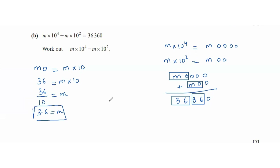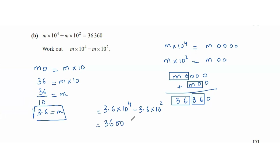Now use M equals 3.6: 3.6×10⁴ minus 3.6×10² equals 36,000 minus 360, giving 35,640.